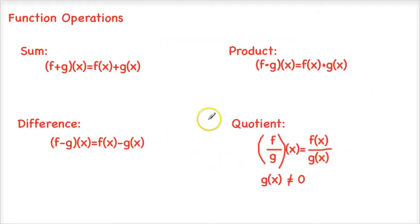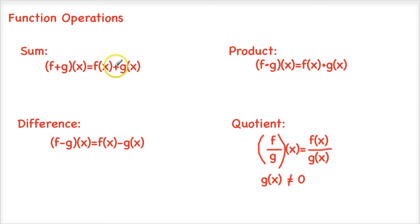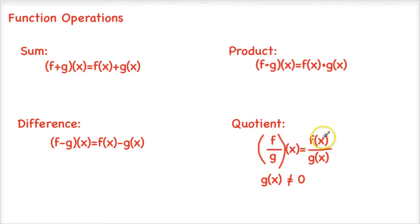Those are evaluating functions. Now we can also do operations with functions — we can add them together, subtract them, multiply, and divide. These are written as: f plus g of x equals f of x plus g of x; the difference f minus g of x equals f of x minus g of x; the product f times g of x equals f of x times g of x. You would just write out each function separately and then either add, subtract, or multiply them together.